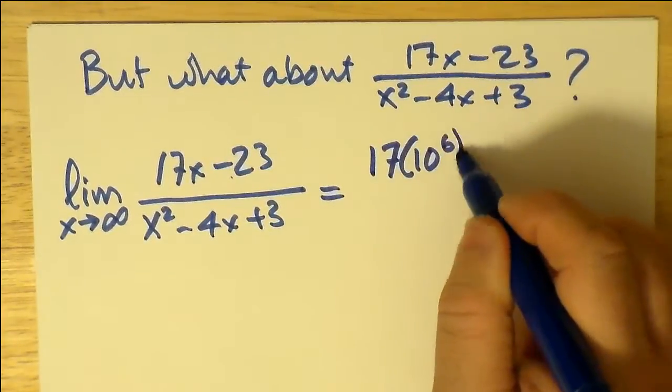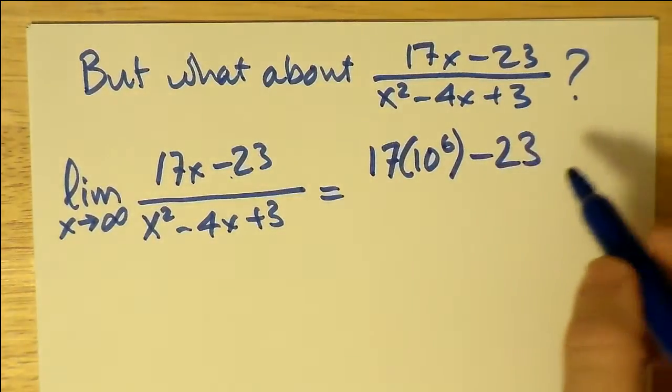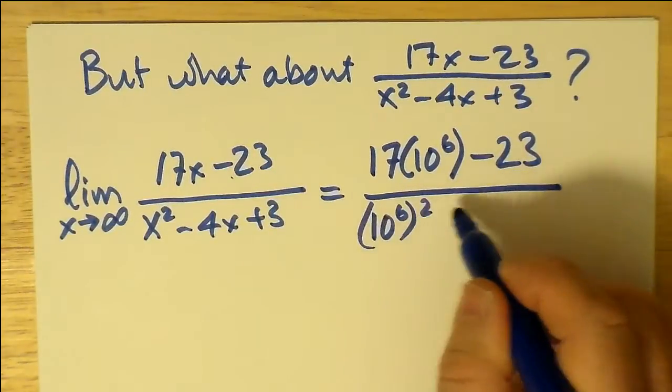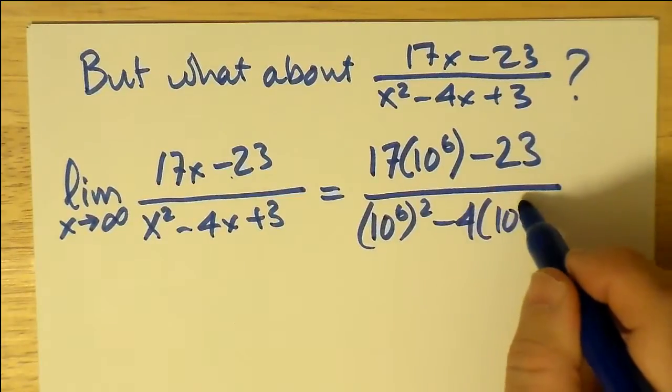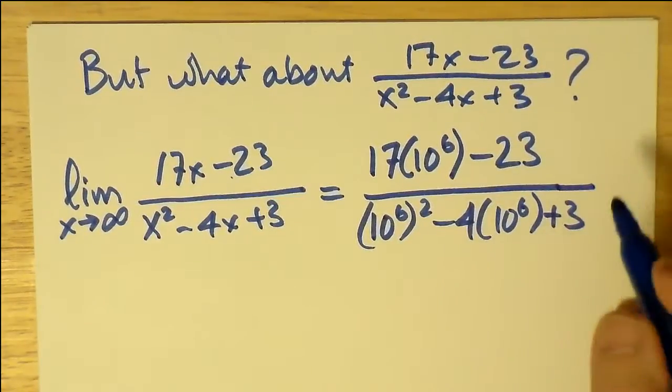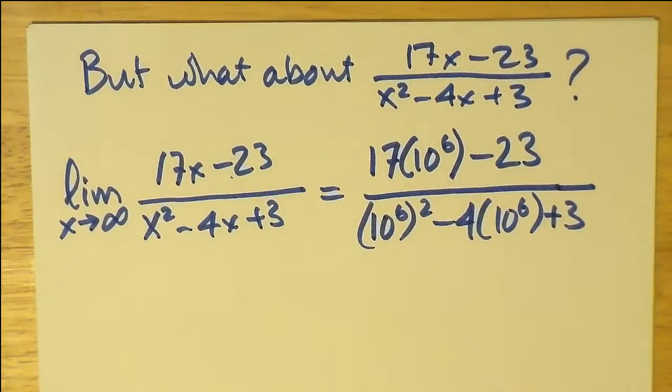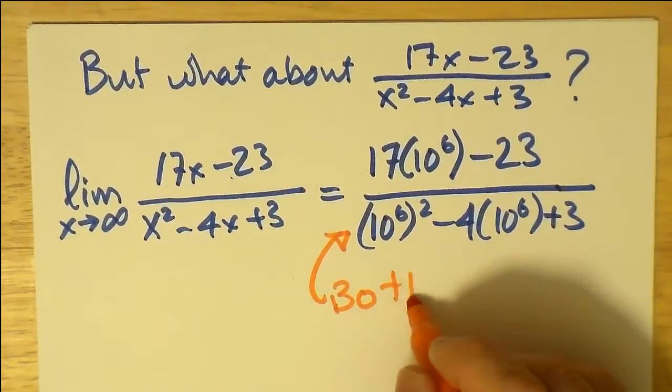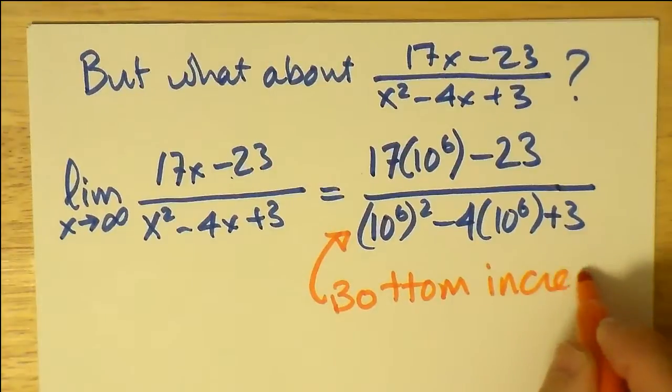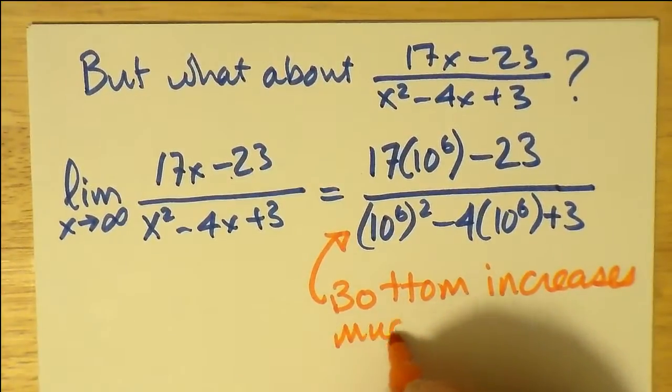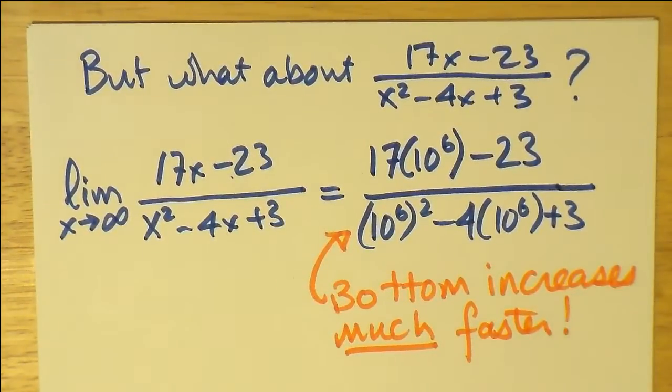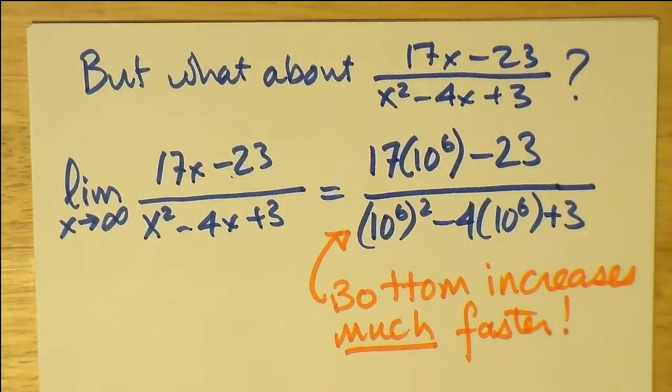Obviously, if the limit as x goes to infinity happens to be some distinct number, we'd want to know about it. So let's let it go to positive infinity. That means, just as before, we're going to substitute 10 to the sixth, or 1,000,000, for x. And we're going to subtract 23. That's subbing in for 1,000,000. And on the bottom, 1,000,000 has to be squared for the x squared term, and then subtract 4 times 1,000,000 plus 3. As you can see, the first term, 10 to the sixth, all squared, is going to completely dominate the denominator. In fact, it's going to completely dominate that whole expression. And that's because the bottom is increasing much faster, much, much faster, due to the x squared term, as x gets very, very large, either very, very negative or very, very positive.